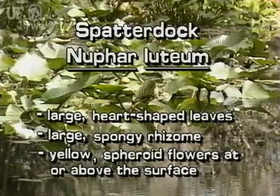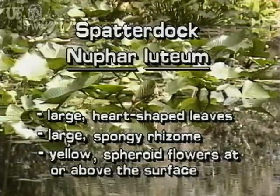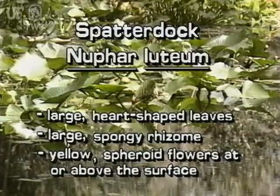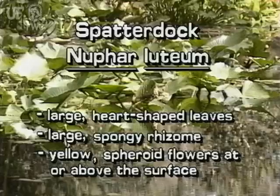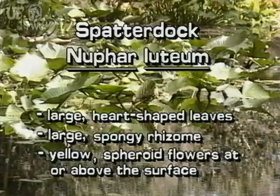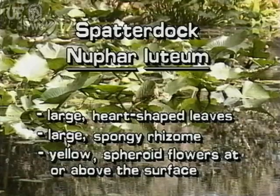Spatterdock is one of the most common and easiest to identify of aquatic plants. It has large, heart-shaped leaves, large spongy rhizomes, and yellow spheroid flowers at or above the water surface.